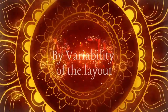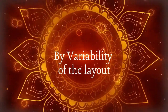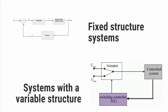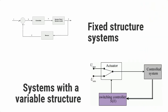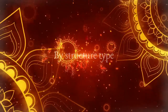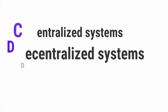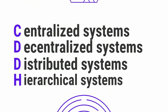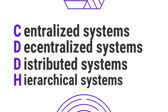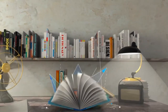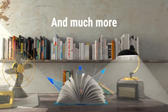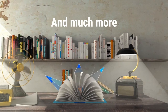By variability of the layout: fixed structure systems and systems with a variable structure. By structure type: centralized systems, decentralized systems, distributed systems, and hierarchical systems. Of course, this is not a complete list — these are just a few of the most frequently used divisions and the elements within them.